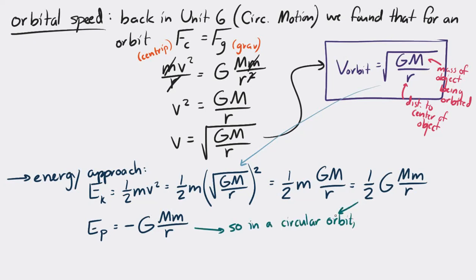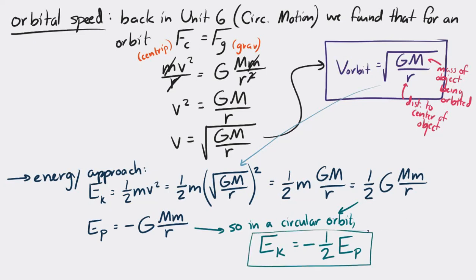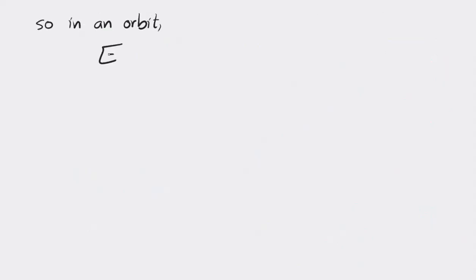So in a circular orbit, there's half the amount of kinetic energy compared to the magnitude of the potential energy. Adding kinetic and potential energy together, the total energy of an object in a circular orbit is −GMm/(2r) — meaning the total energy is negative.